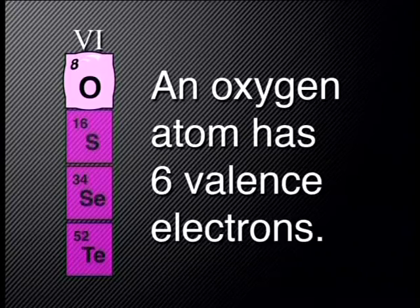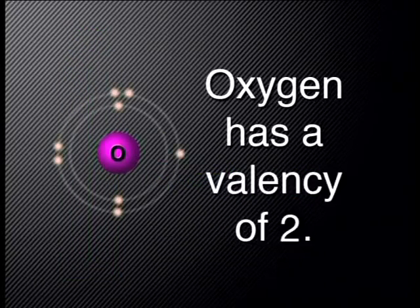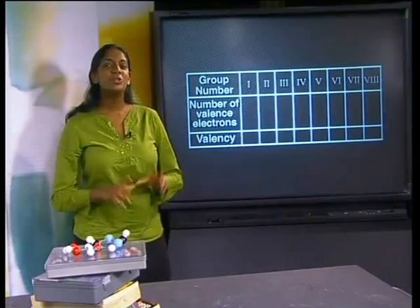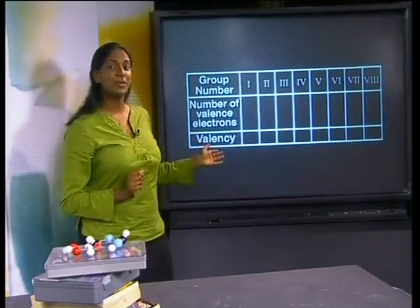I want to make sure that you understand the difference between valence electrons and valency. Have another look at the energy level diagram of oxygen. An oxygen atom is in group 6 on the periodic table and has 6 valence electrons. But we say it has a valency of 2, because it needs to gain 2 electrons to have a filled outer energy level. When oxygen gains electrons, it is no longer neutral, but forms an ion with a charge of minus 2.